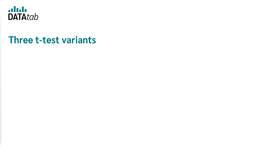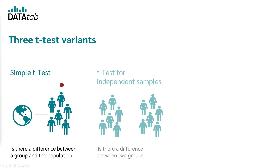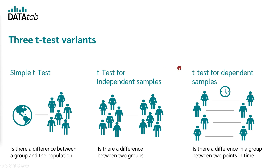Let's start from scratch. There are three variants of the t-test: the t-test for one sample, the independent sample t-test, and the dependent sample t-test. The simple t-test is used to check whether there is a difference between a group and a given test value. This t-test is very often used in quality assurance, for example, to check whether a produced screw really has the given weight on average.